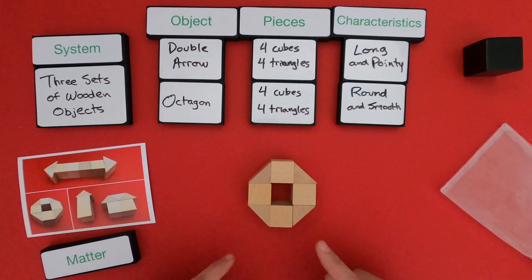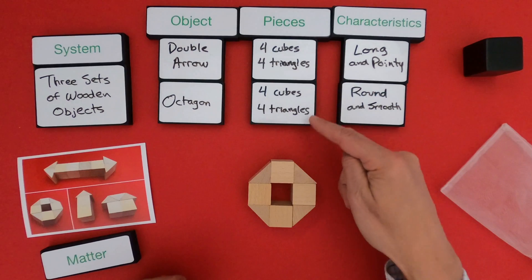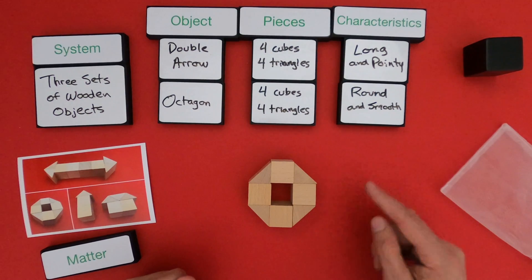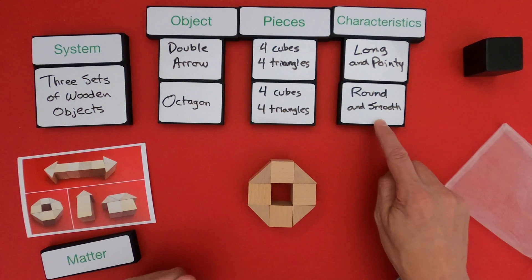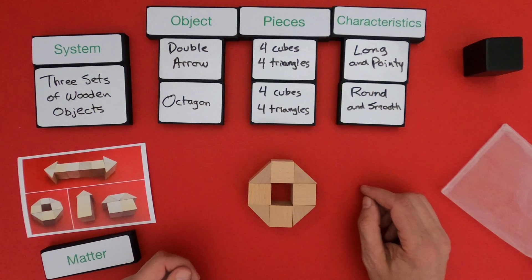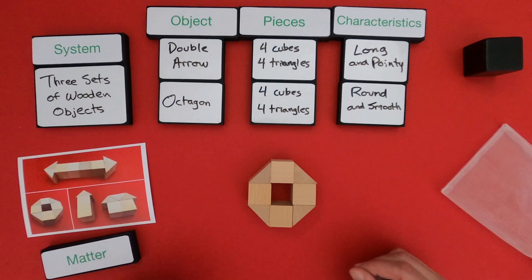So this octagon, I would say, is made of the same pieces, four cubes and four triangles, but you can see that its characteristics have changed. Instead of being long and pointy, it's round and smooth. Let me do that again for the last object in our set.